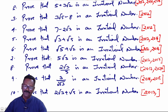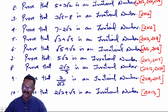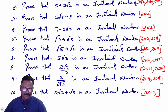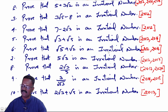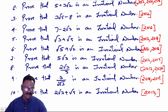Next question: Prove that 5√3 is an irrational number, which appeared in 2012 and 2017. Next question: Prove that 2√3/5 is an irrational number, which appeared in 2012 and 2020.